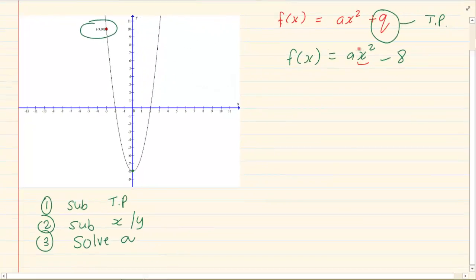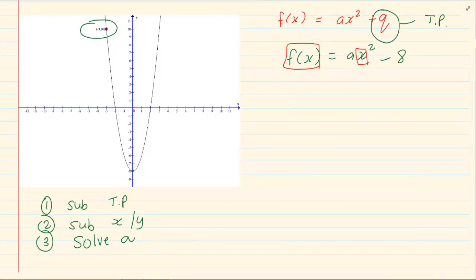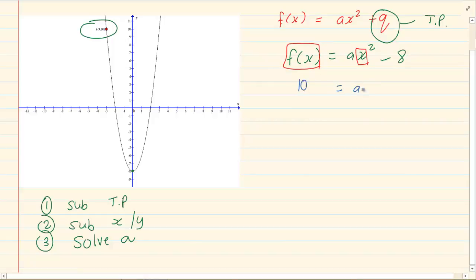We are going to put that in the places of my x and my f of x which refers to y. So we are going to have in our y 10, in our x minus 3 squared minus 8. Our whole aim is to ultimately solve for A. So using your solving for x rules, your solving for unknown rules, you are going to bring this over so we have got 18 is equal to 9A.